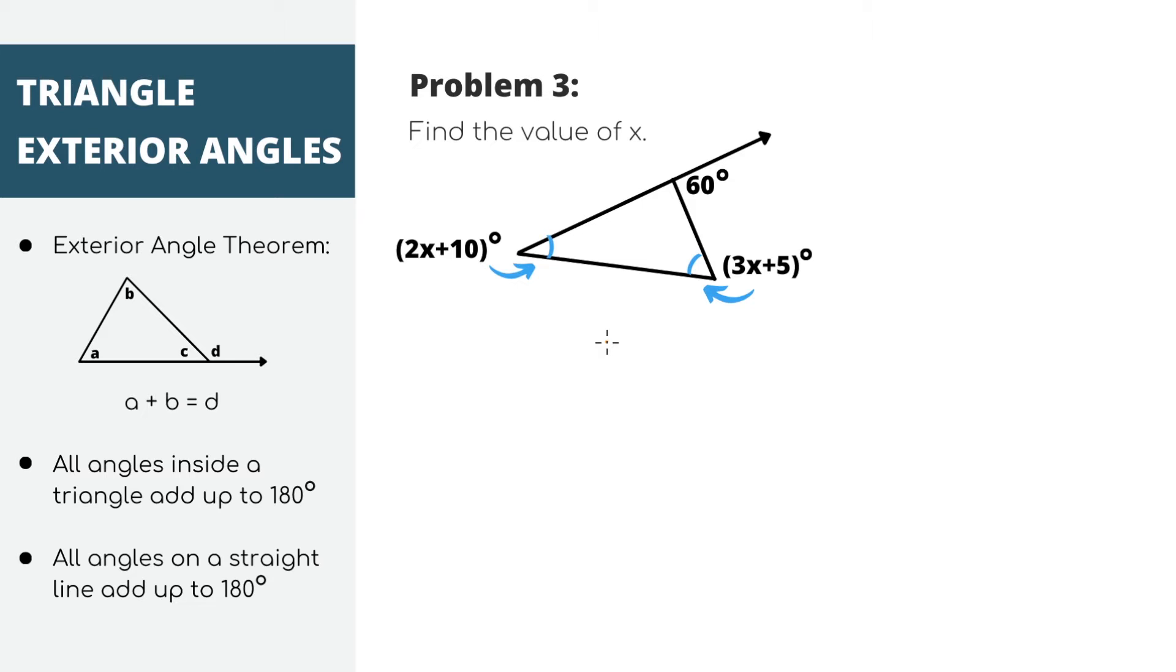Problem 3. Again, this is the same problem, but the diagram just looks a little different. If you think about it, the diagram is just flipped and rotated so that it looks upside down. But at the end of the day, it's still just a triangle with a little tail. So again, let's use the exterior angle theorem. This is our exterior angle on the outside of the triangle.